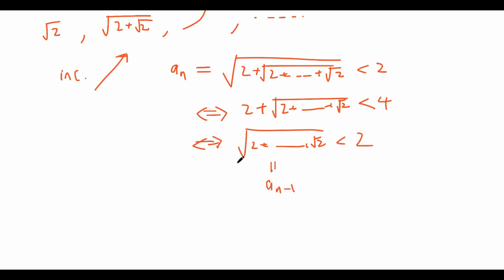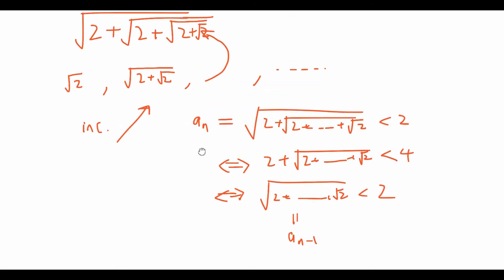We can use induction to prove that the n-th term is less than 2: if we prove the (n−1)-th term is less than 2, then it shows the n-th term is less than 2. By induction, we just need the base case: square root of 2 is less than 2, which rearranges to 2 is less than 4 — clearly true. So the entire expression is bounded from above by 2, and since it's increasing, it must converge to some value.